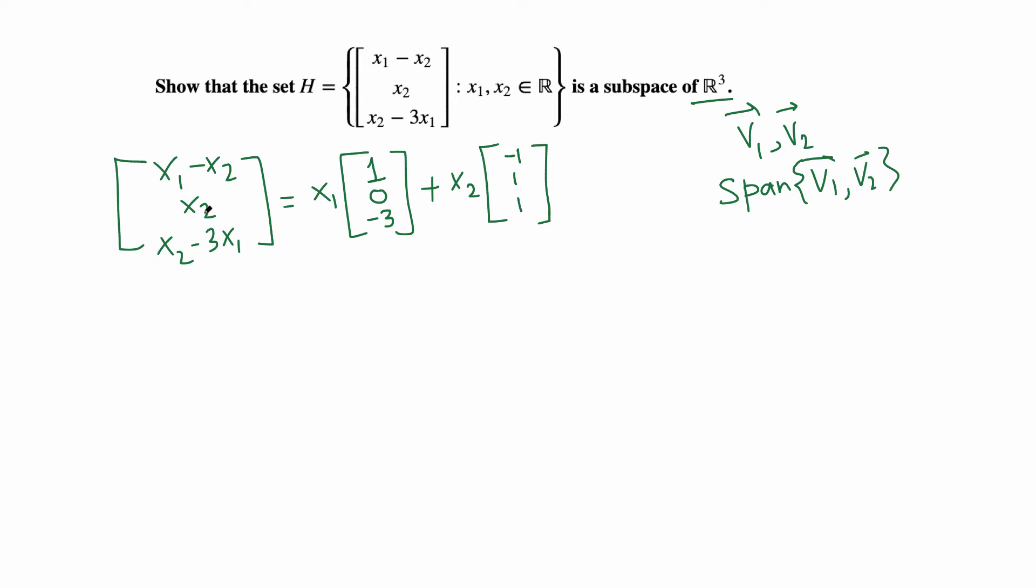This generic vector in H is a linear combination of these two vectors: [1, 0, -3] and [-1, 1, 1], where x1 and x2 are any real numbers. This collection is the span of these two vectors as we vary x1 and x2 over real numbers.